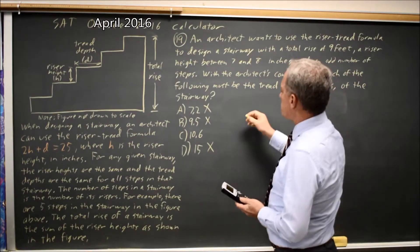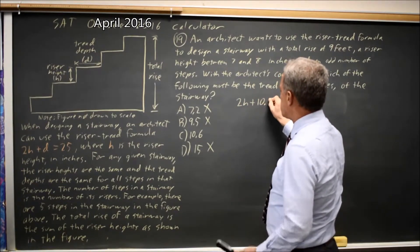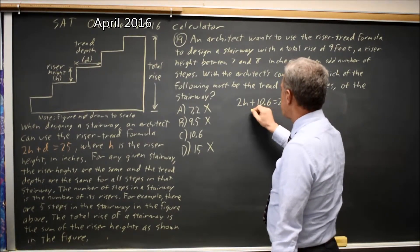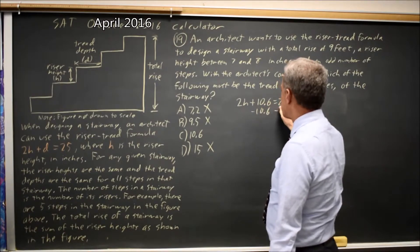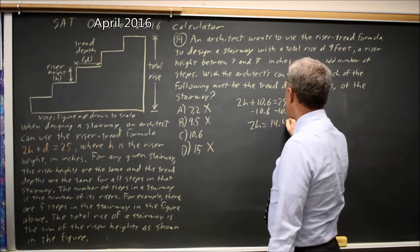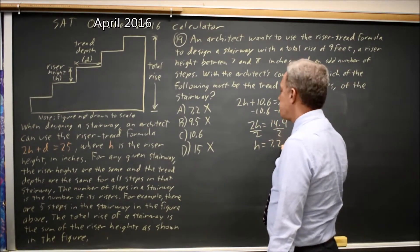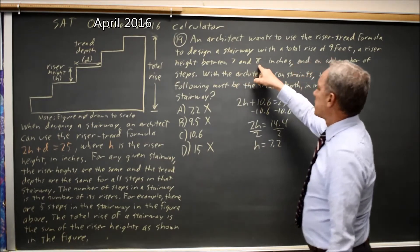With a tread depth D of 10.6, I have 2H plus 10.6 equals 25. Subtract 10.6 from both sides. 2H equals 14.4. Divide both sides by 2. H equals 7.2, which is between 7 and 8. So that is a possible answer.